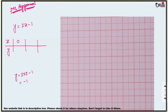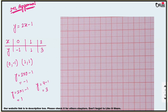If x = 1, then y = 2(1) - 1 = 1. If x = 2, then y = 2(2) - 1 = 3. So the three coordinates are (0, -1), (1, 1), and (2, 3). Now plot these three points on your graph paper.